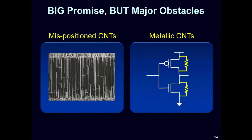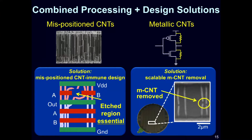Despite the promise of carbon nanotubes, there's always a catch: it's very difficult to build any sort of working system out of them. Like many, if not all, emerging nanomaterials, carbon nanotubes are subject to substantial inherent imperfections and variations, which have made realizing working systems and sensors infeasible in the past. The key to overcoming these obstacles and enabling us to build systems with these new technologies is to rely on a combination of both processing techniques developed in the lab and circuit design techniques, which allow us to both build and design circuits and systems in such a way to guarantee mathematically that they are immune to these imperfections.